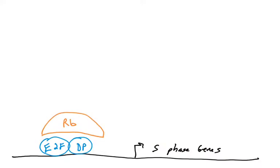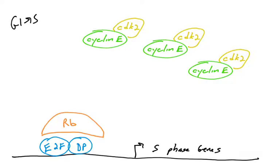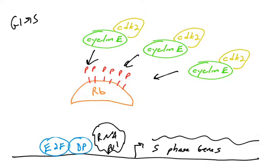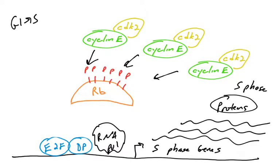Bringing it back to those S phase genes introduced at the beginning of the video: now that we have high levels of cyclin E with CDK2, the RB protein — which is present on many different promoters — becomes hyperphosphorylated and inactive. Now that it is inactive, RNA polymerase can be recruited to the gene by transcription factors E2F and DP, allowing for the transcription and production of proteins that will push the cell into S phase and commit the cell to replicating its DNA.